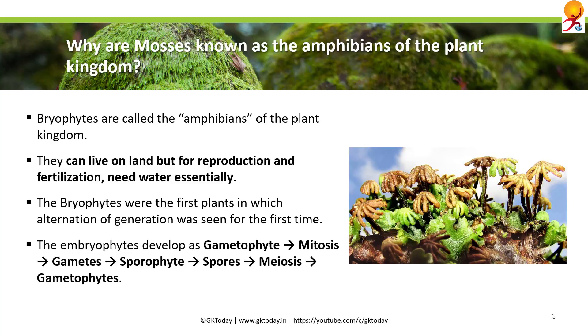The embryophytes develop as gametophytes, then undergo mitosis, they become gametes, then sporophytes, then spores, then undergo meiosis, and then again gametophytes are formed.